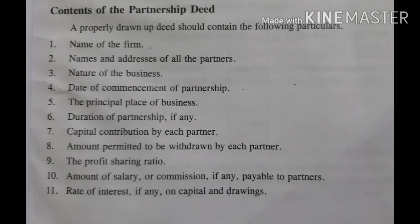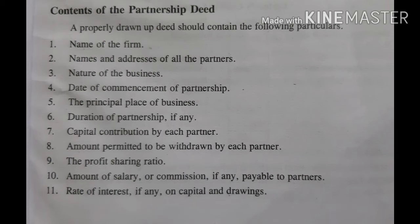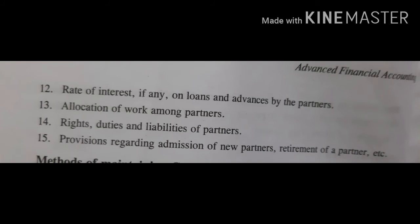The contents of a partnership deed include: name of the firm; name and addresses of all the partners; nature of the business; date of commencement of partnership; the principal place of business; duration of partnership if any; capital contribution by each partner; amount permitted to be withdrawn by each partner; the profit sharing ratio; amount of salary or commission if any payable to partners; rate of interest if any on capital and drawings; rate of interest if any on loans and advances by partners; allocation of work among partners.